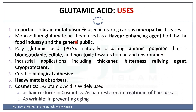Glutamic acid is very important in brain metabolism, so it is used in various neuropathic diseases. Glutamic acid in the form of monosodium glutamate is used as a flavor enhancing agent in the food industry. Polyglutamic acid is a naturally occurring anionic biopolymer that is biodegradable, edible, and non-toxic. Industrial applications include use as a thickening agent, bitterness-relieving agent, cryoprotective agent, biological adhesive, heavy metal absorber, and in cosmetics for hair restoration and treatment of hair loss.